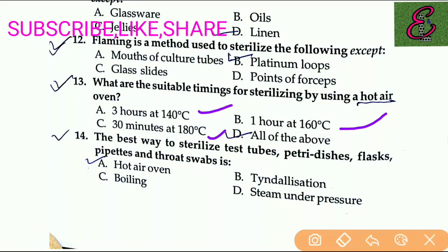The best way to sterilize digestive petri dishes, flasks, pipettes, and throat swabs — the answer is hot air oven.